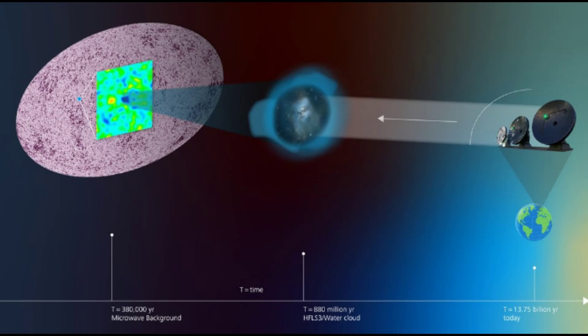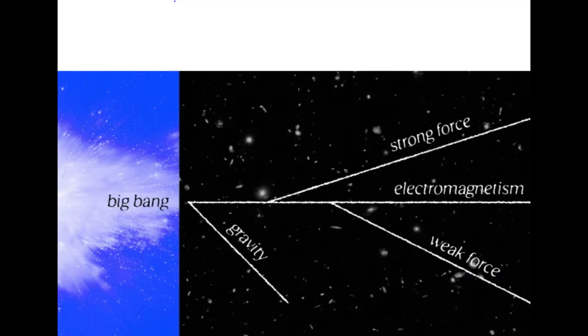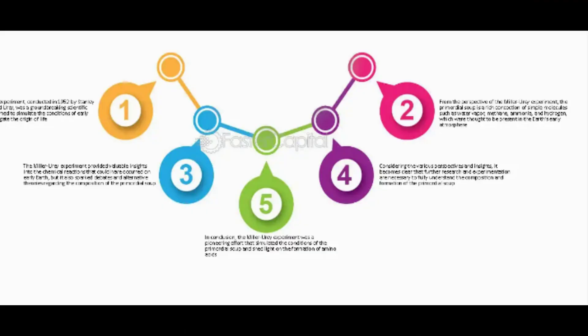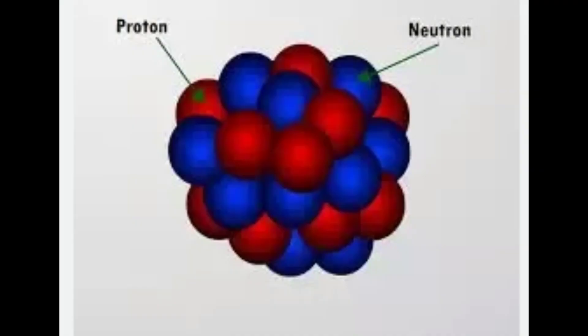Cooling and particle formation. As the universe expanded, it also cooled rapidly. This allowed the fundamental forces, like electromagnetism and the strong nuclear force, to condense out of the primordial energy soup. Subatomic particles like protons and neutrons began to form, building blocks of the universe.